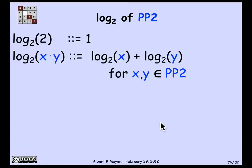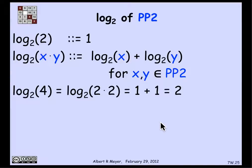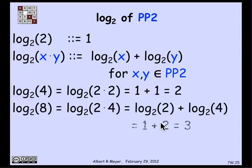Let's verify: log₂(4) = log₂(2×2) = log₂(2) + log₂(2) = 1+1 = 2. Correct. Log₂(8): 8 is 2×4, so log₂(8) = log₂(2) + log₂(4) = 1+2 = 3. That's right. When reasoning this way, we use only the structural definition of log₂, not prior knowledge, to prove its properties.